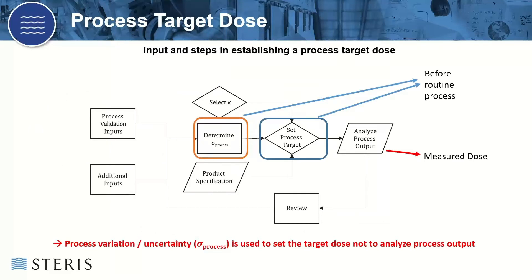We take a look at the inputs and steps in establishing a process target dose. The radiation process is monitored using processing parameters and dosimeter measurements. Three process targets at the routine monitoring position can be defined: a lower target dose, an upper target dose, and a corresponding dose target, respectively to the lower and upper set limits for the process target dose and the actual process target dose chosen for routine processing conditions. There are a number of factors used in determining the range of process target doses, depicted in Figure 1. The key point is that process variation and measurement uncertainty are both used to set the target dose as an input — not to analyze the process output. The output is the measured dose.